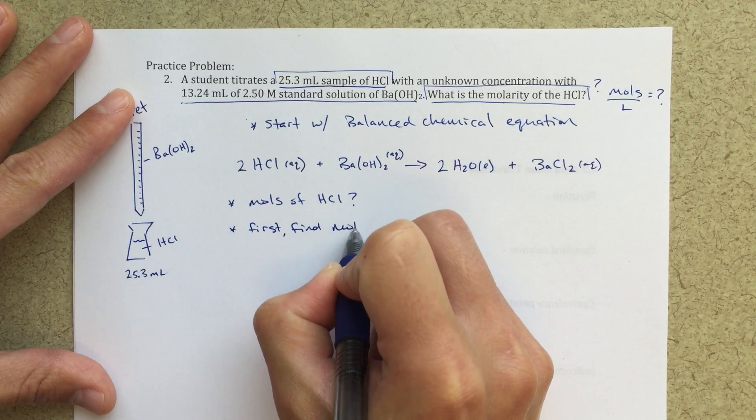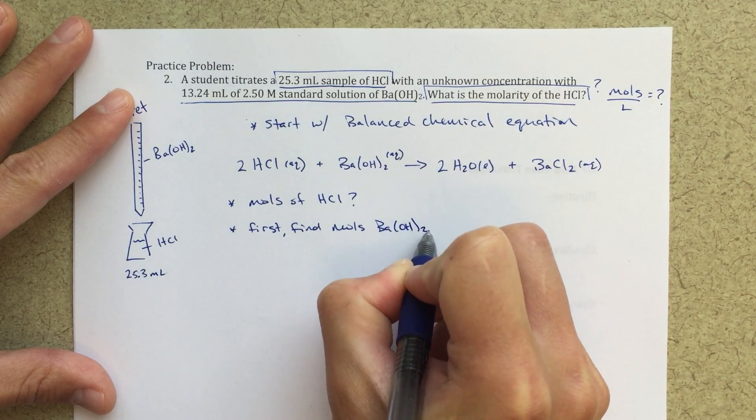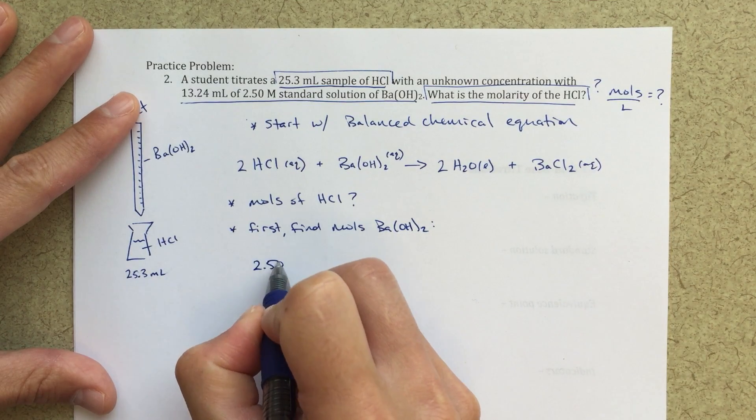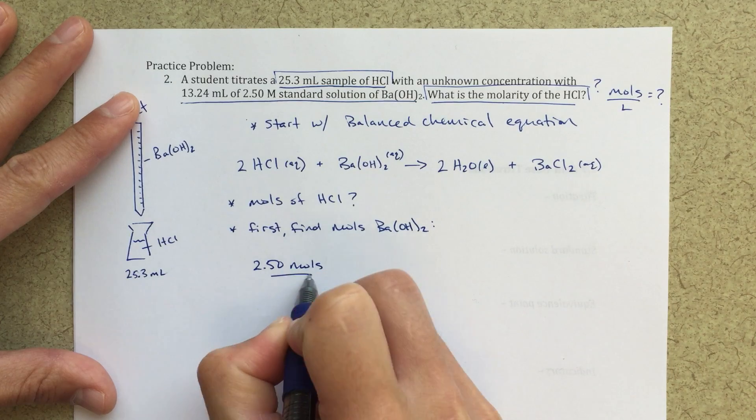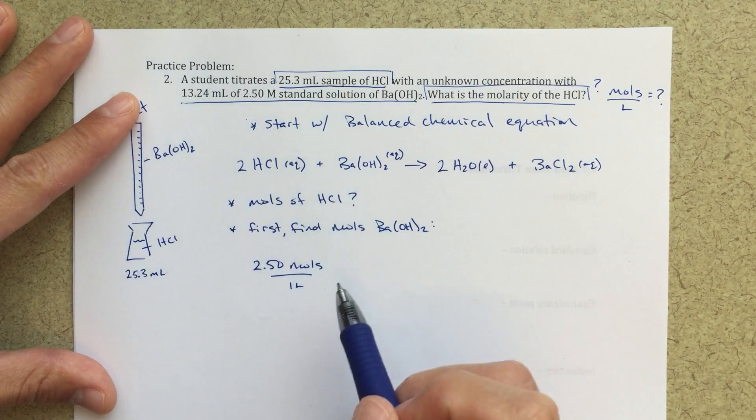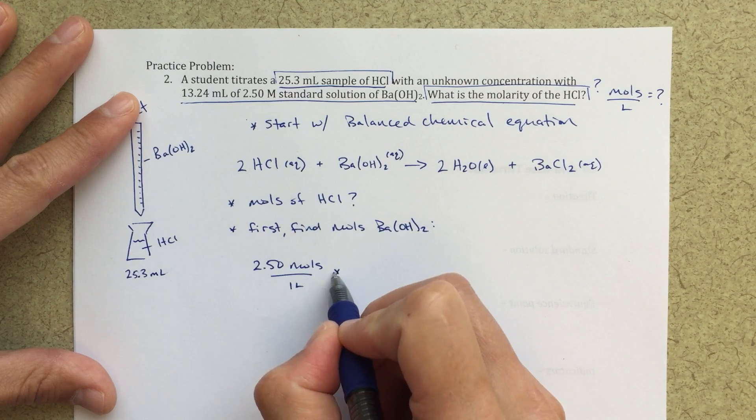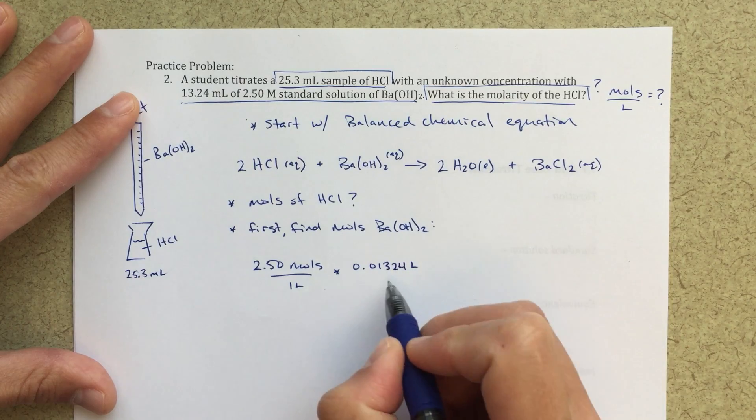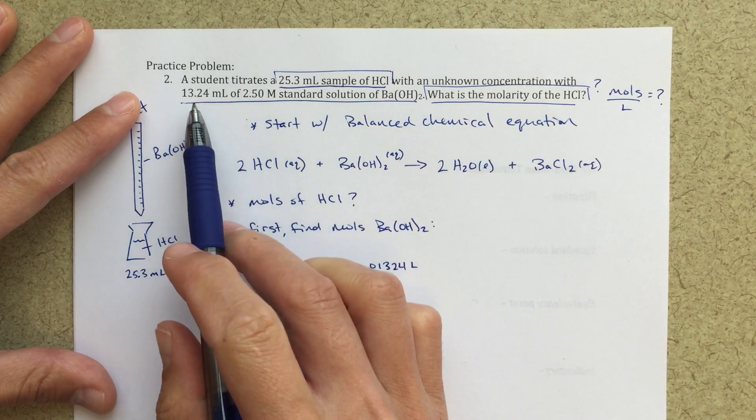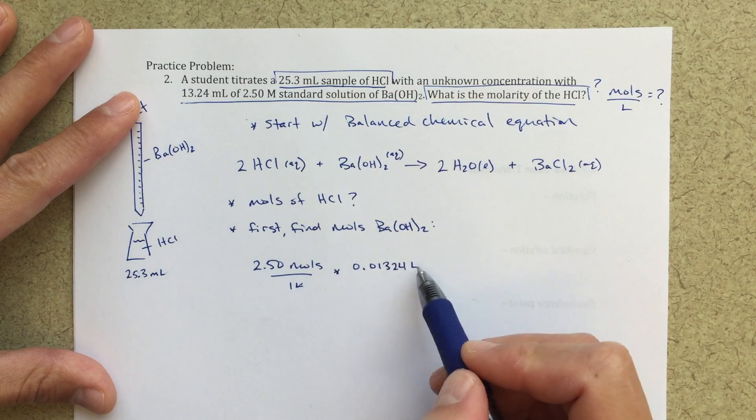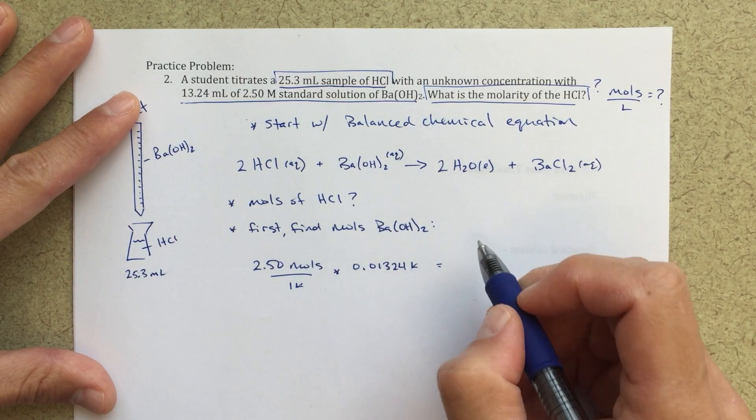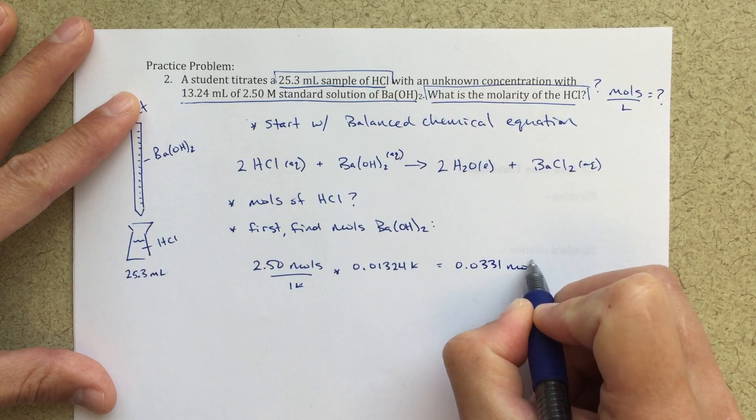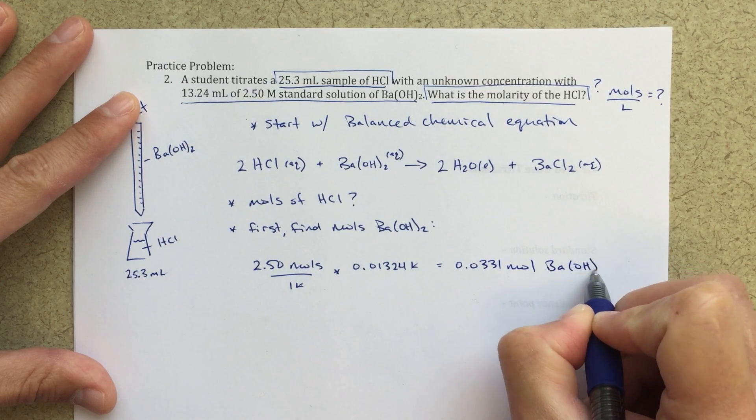So let's find moles first. Find moles of barium hydroxide. So to find the moles of barium hydroxide, I'm going to take 2.50 moles over one liter. So that 2.5 molar, that means 2.5 moles per liter. And I'm going to multiply that by 0.01324 liters. So here I've converted this 13.24 milliliters into liters. If I cancel out my units of liters, that gives me a number of moles of 0.0331 moles of barium hydroxide.